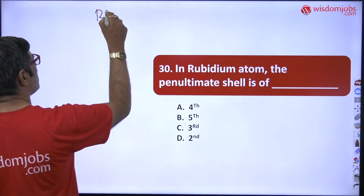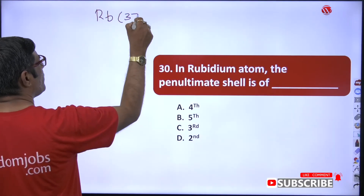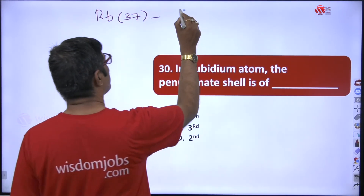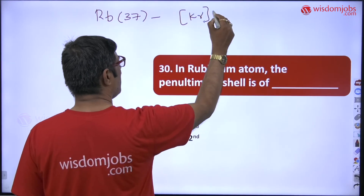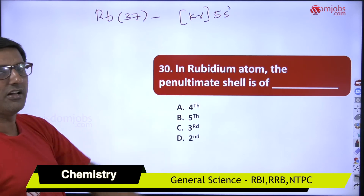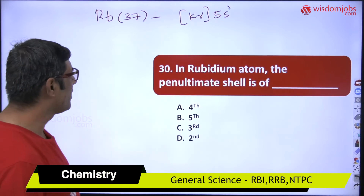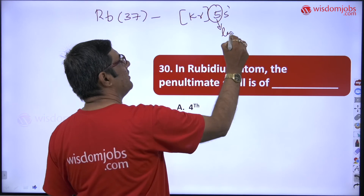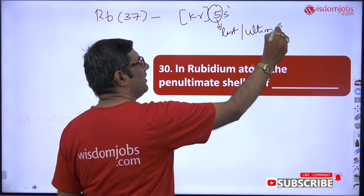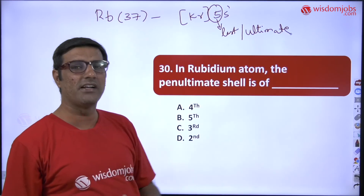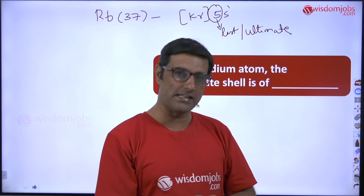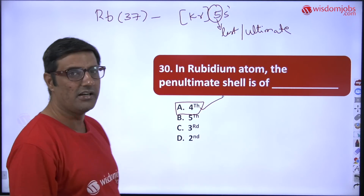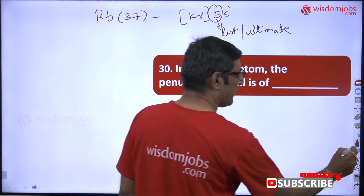Next question: in a rubidium atom, the penultimate shell is which? The atomic number of rubidium is 37. It comes after krypton, so its electronic configuration is [Kr] 5s1. The fifth shell is the ultimate — that is, the last shell. Penultimate means the shell preceding the last, so it is obviously the fourth shell. The answer is the fourth shell, option A.